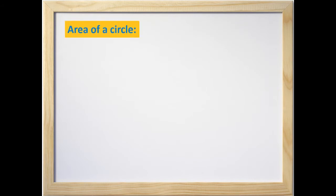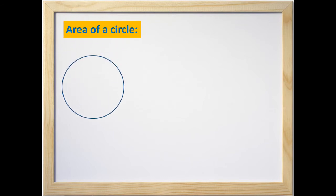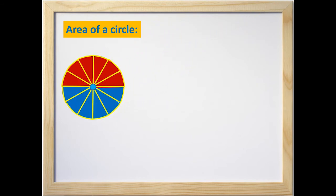Now we are going to learn how to find the area of a circle. Till now we learned how to find the area of polygons like rectangles, squares, parallelograms, and triangles, using length, breadth, and height. But a circle is not a polygon — it is a closed curve. To find the area of a circle of radius r, I have divided the circle into 12 congruent sectors. A sector is the area enclosed between two radii and an arc of the circle.